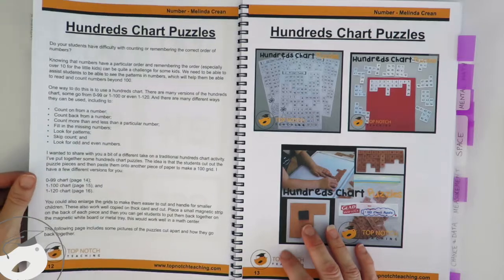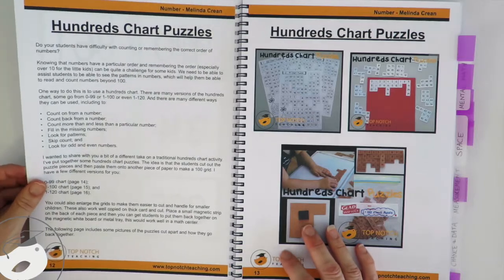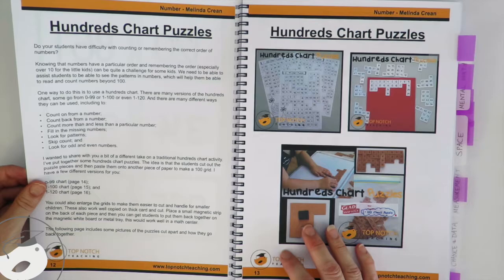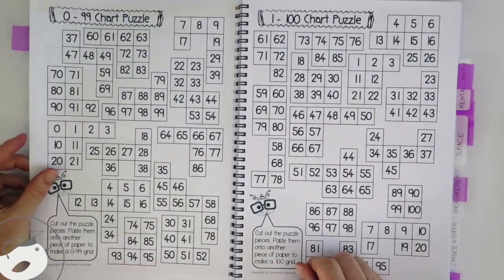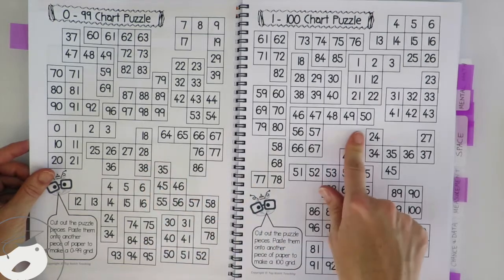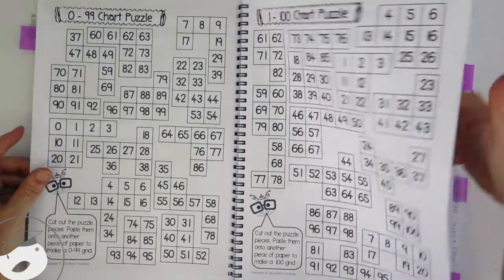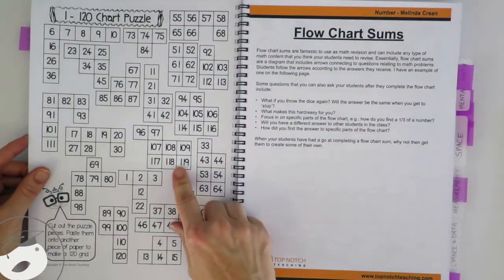These are an absolutely fantastic way to help kids with the ordering of numbers and counting. You'll notice in the book I've included hundreds charts for 0 to 99, 1 to 100, and also 1 to 120.